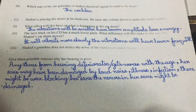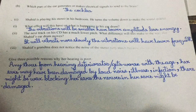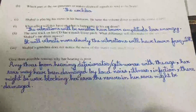Shahid's grandma does not notice the noise of the speaker very clearly. Give three possible reasons why her hearing is poor. Any three from the following: hearing deteriorates and gets worse with age; her ears may have been damaged by loud noise; illness or infection; there might be wax blocking her ears; the nerves in her ears might be damaged. These are the reasons which might be responsible for her poor hearing.